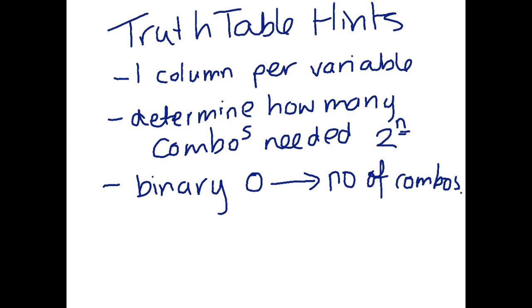you label each row with the binary 0 through to the final number of combinations. So hopefully that makes a little bit sense. So one column per variable. Determine then how many combinations that you need, based on the number of variables that are being used. Then you have the binary values. So 0 through to the number of combinations that there are. And then you fill out the details and the solution.